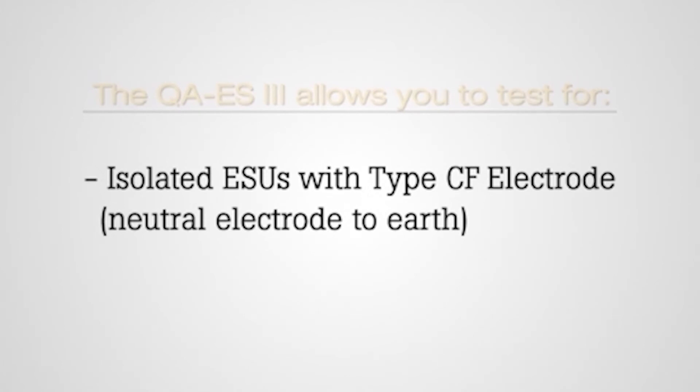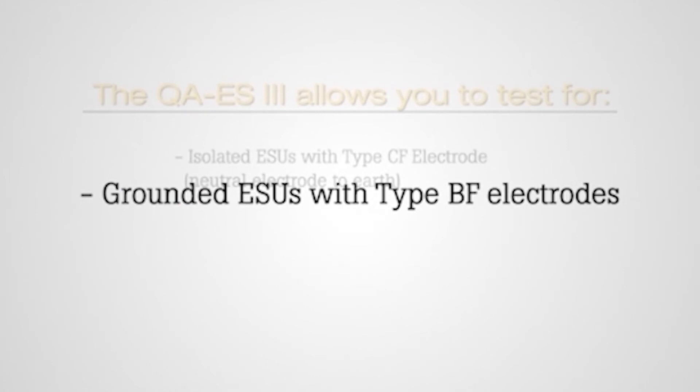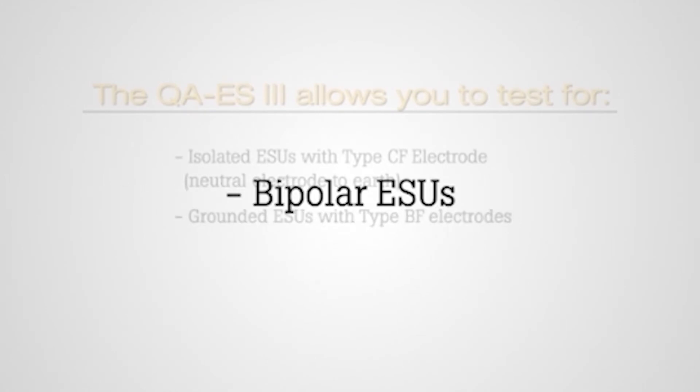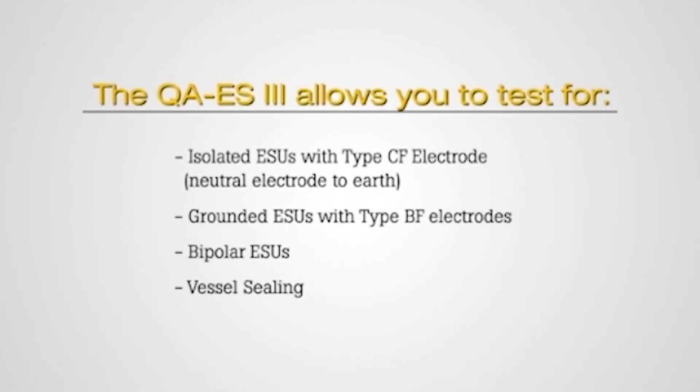The QAES-3 also allows you to test HF leakage for isolated ESUs with type CF electrode neutral electrode to earth, grounded ESUs with type BF electrodes, bipolar ESUs, and vessel sealing.